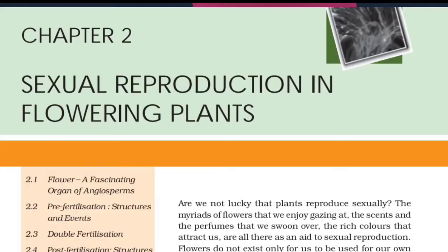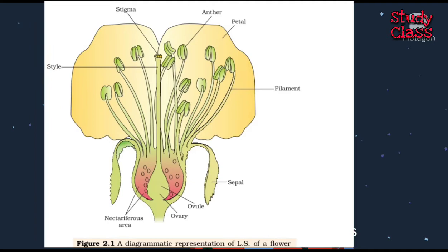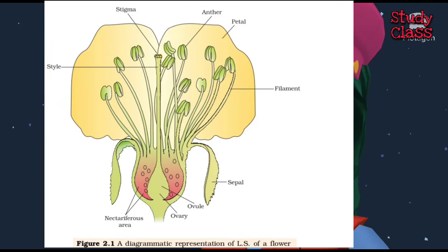Chapter: Sexual Reproduction in Flowering Plants. Are we not lucky that plants reproduce sexually? The myriads of flowers that we enjoy gazing at, the scents and perfumes that we swoon over, the rich colors that attract us, are all there as an aid to sexual reproduction. Flowers do not exist only for our own selfishness. All flowering plants show sexual reproduction, showing an amazing range of adaptations to ensure formation of the end products of sexual reproduction — the fruits and seeds.